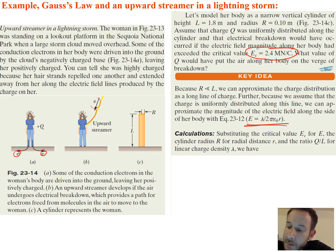So for the calculations, we're going to substitute the critical value E_C for E, the cylinder radius R for the radial distance r, and the ratio Q over L for our linear charge density, lambda. So really, it's just going to turn into, and this is using the equation that we just derived in the previous slide. It's going to be Q over L, which was our charge density, linear charge density, divided by 2π times epsilon naught times big R.